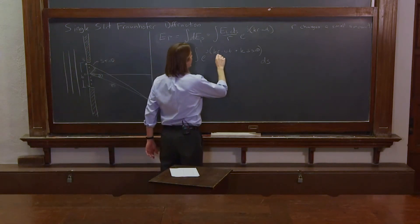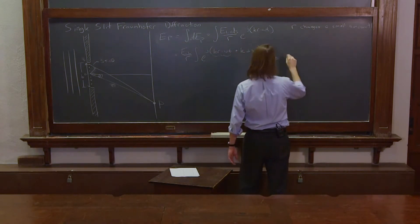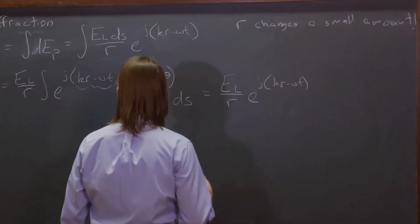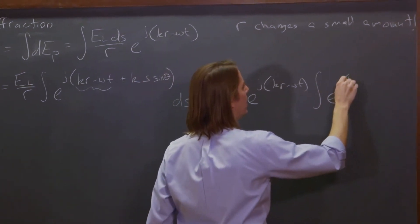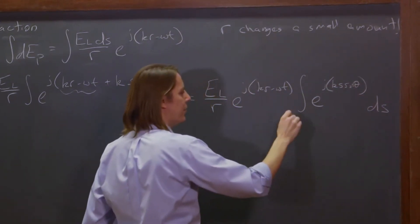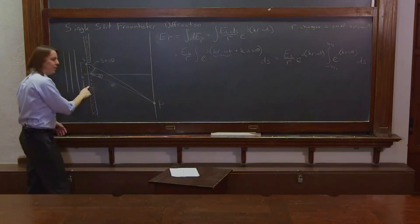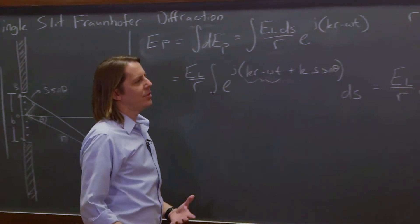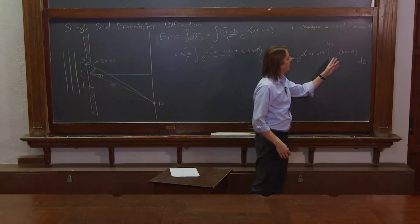Since this central R is just the R of the middle, that whole factor can come out. So it's equal to E_L over R, times E to the j(kR − ωt), and the integral is now just the integral of E to the j·k·S·sinθ dS. As we integrate, we go from −B/2 to B/2 — from the bottom of the slit to the top of the slit. And we have everything that depends on S inside the integral.